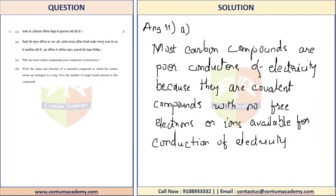If you have time at the end of the paper, please underline the key terms — 'covalent compounds' and 'no free electrons.' It's a good idea to underline the keywords, either with a pencil or pen, to highlight that these are the important terms. That's how you would answer Question 11A, and this would fetch you one mark.